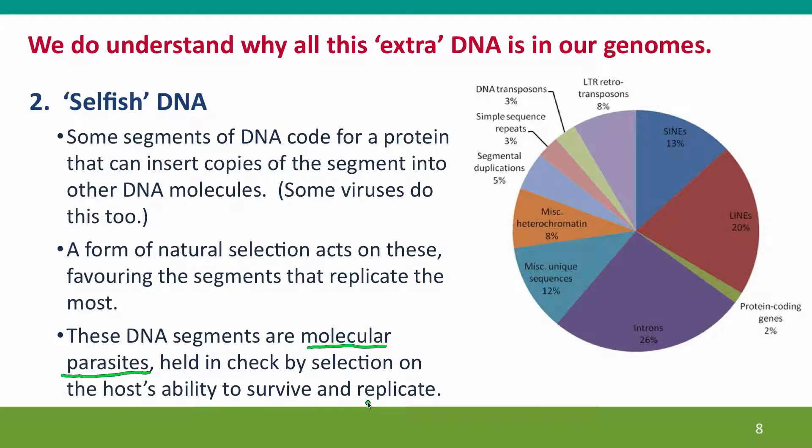Our genomes fill up with these molecular parasites — that's really what they are. They're using our genome as an ecosystem, increasing as best they can, and they're held in check by selection on us and our ability to survive and replicate. If we get too much of this DNA in our genome, our genomes won't be able to function and we'll die off. That's not a very elegant functional explanation, but we think it's right.